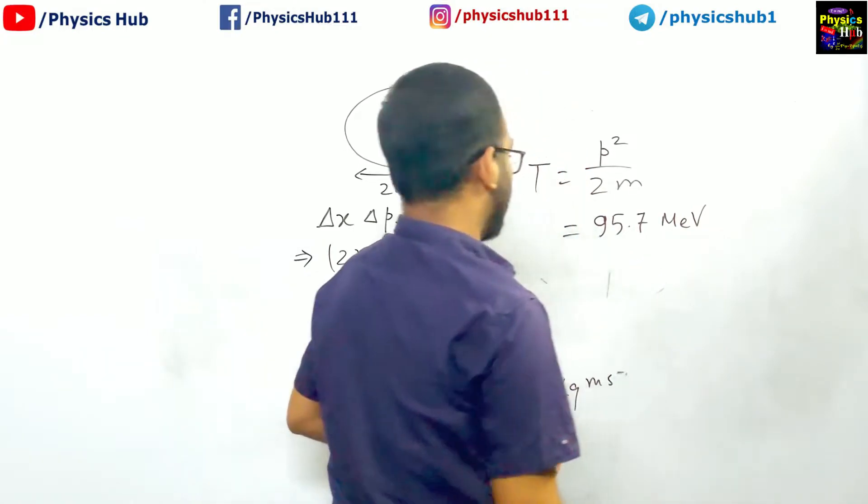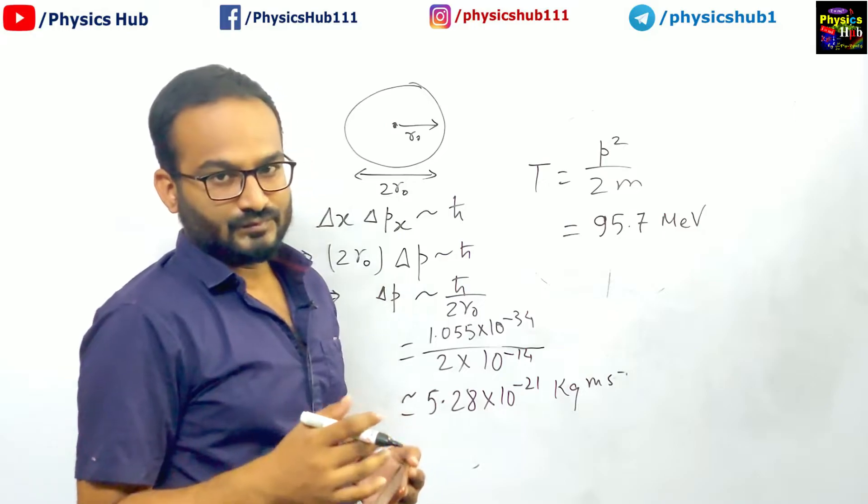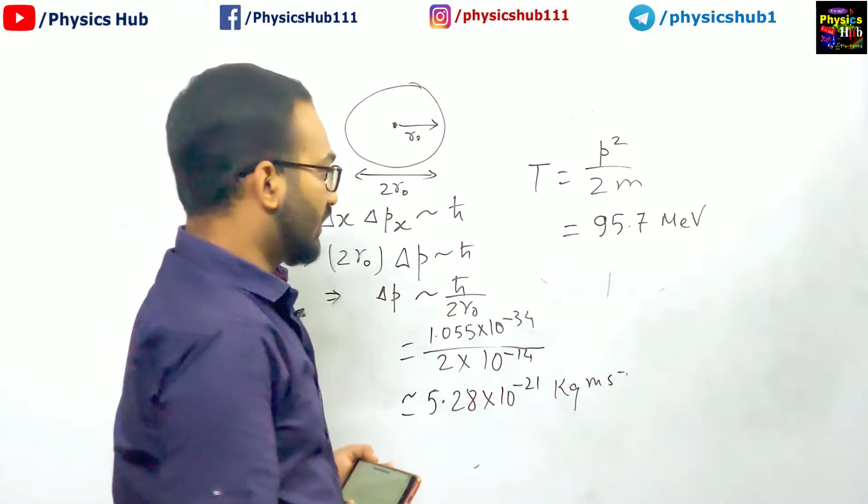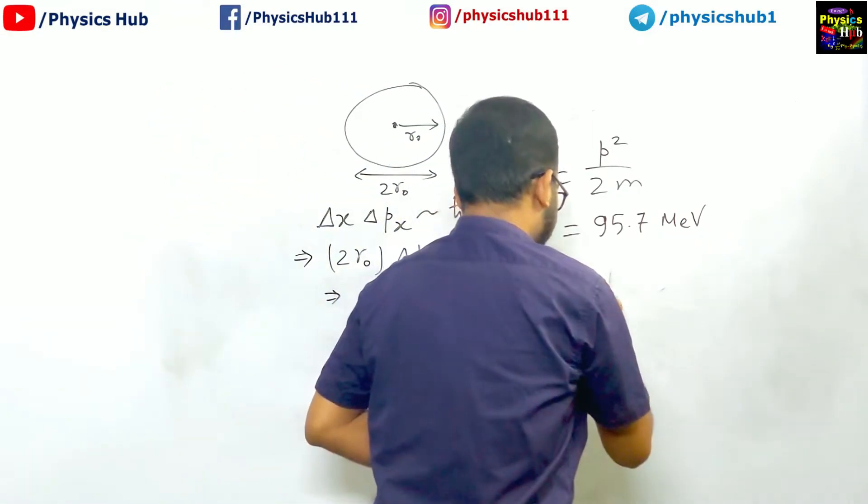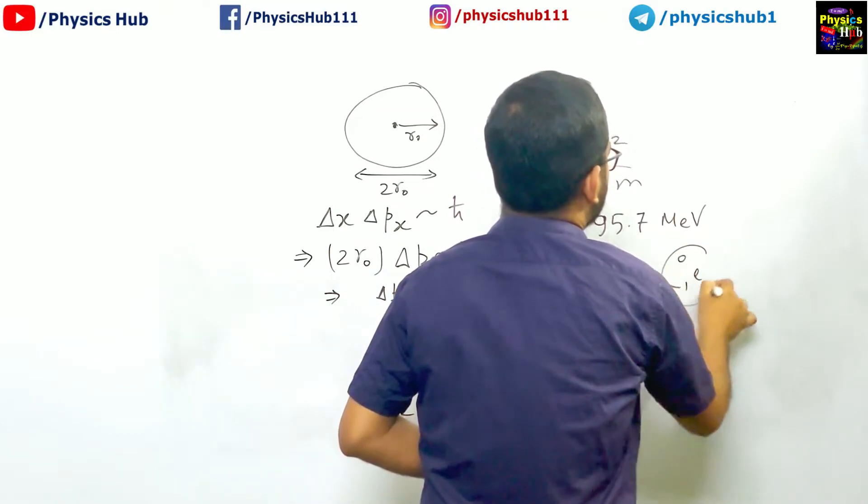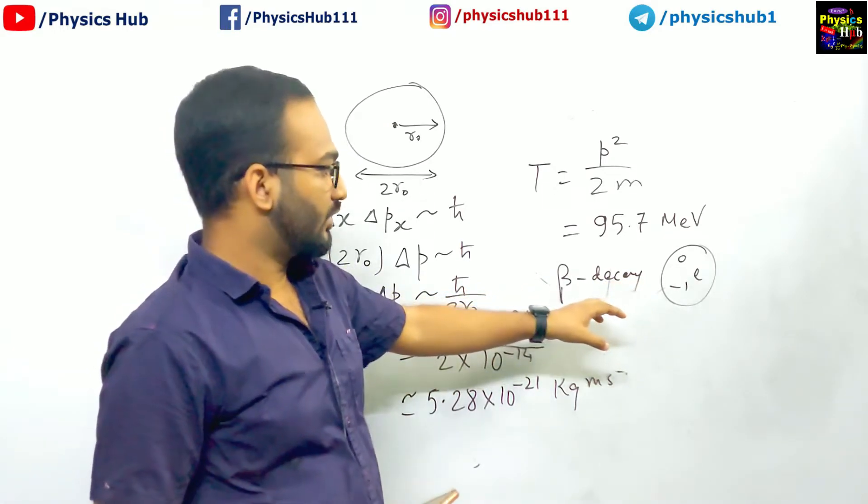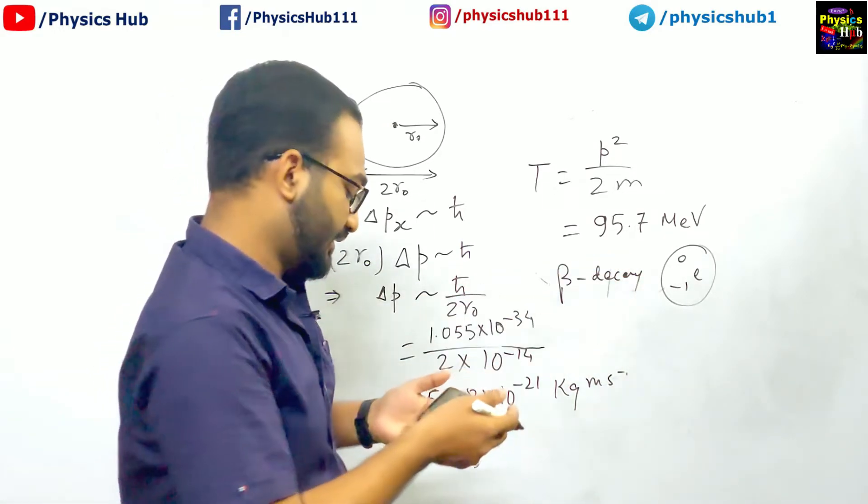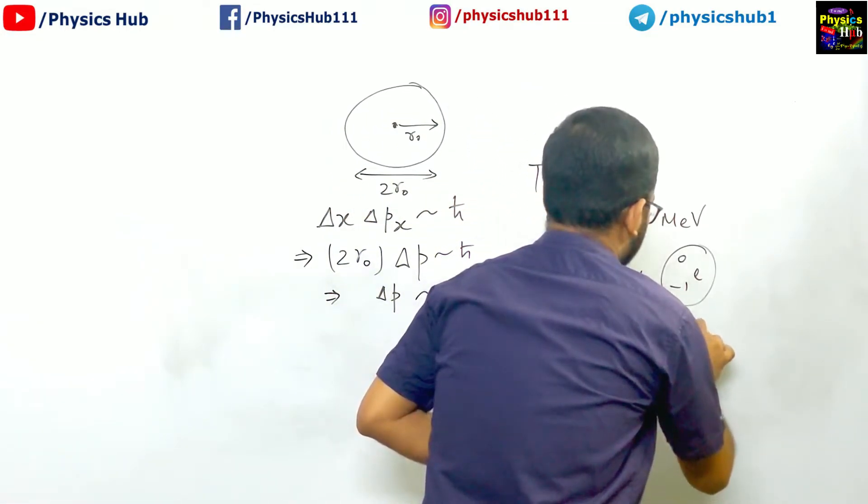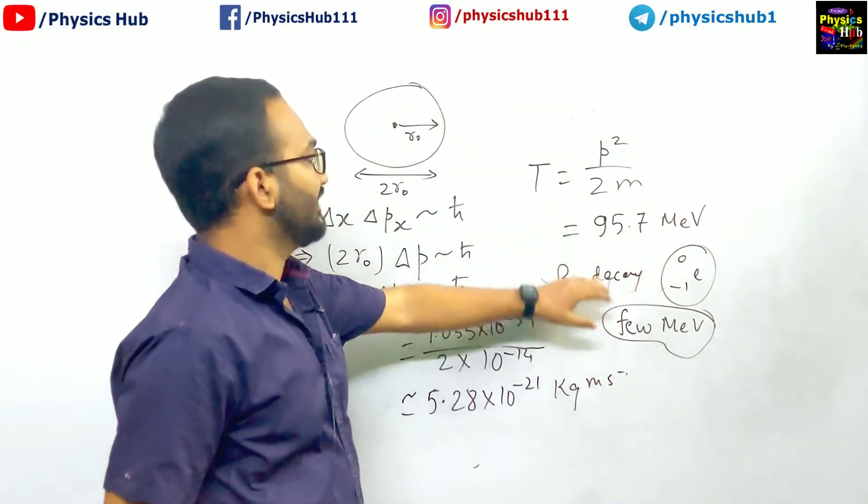You are going to get around 95.7 mega electron volts. But this is the kinetic energy you expect if you consider this model. Now for the beta decay, beta minus is an electron. The order of energy of this beta decay, meaning the electrons, is of few MeV only. But to reside inside the nucleus...